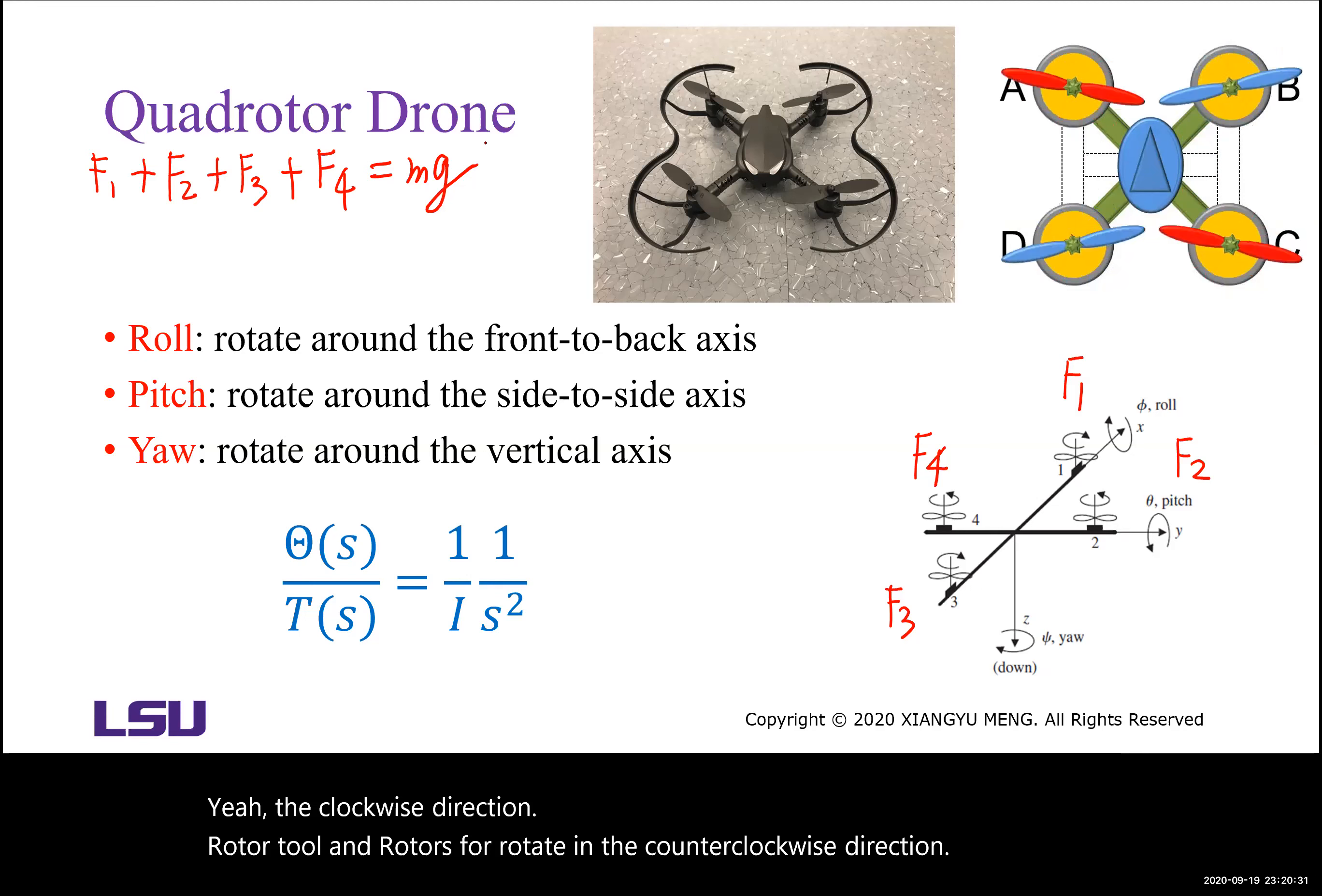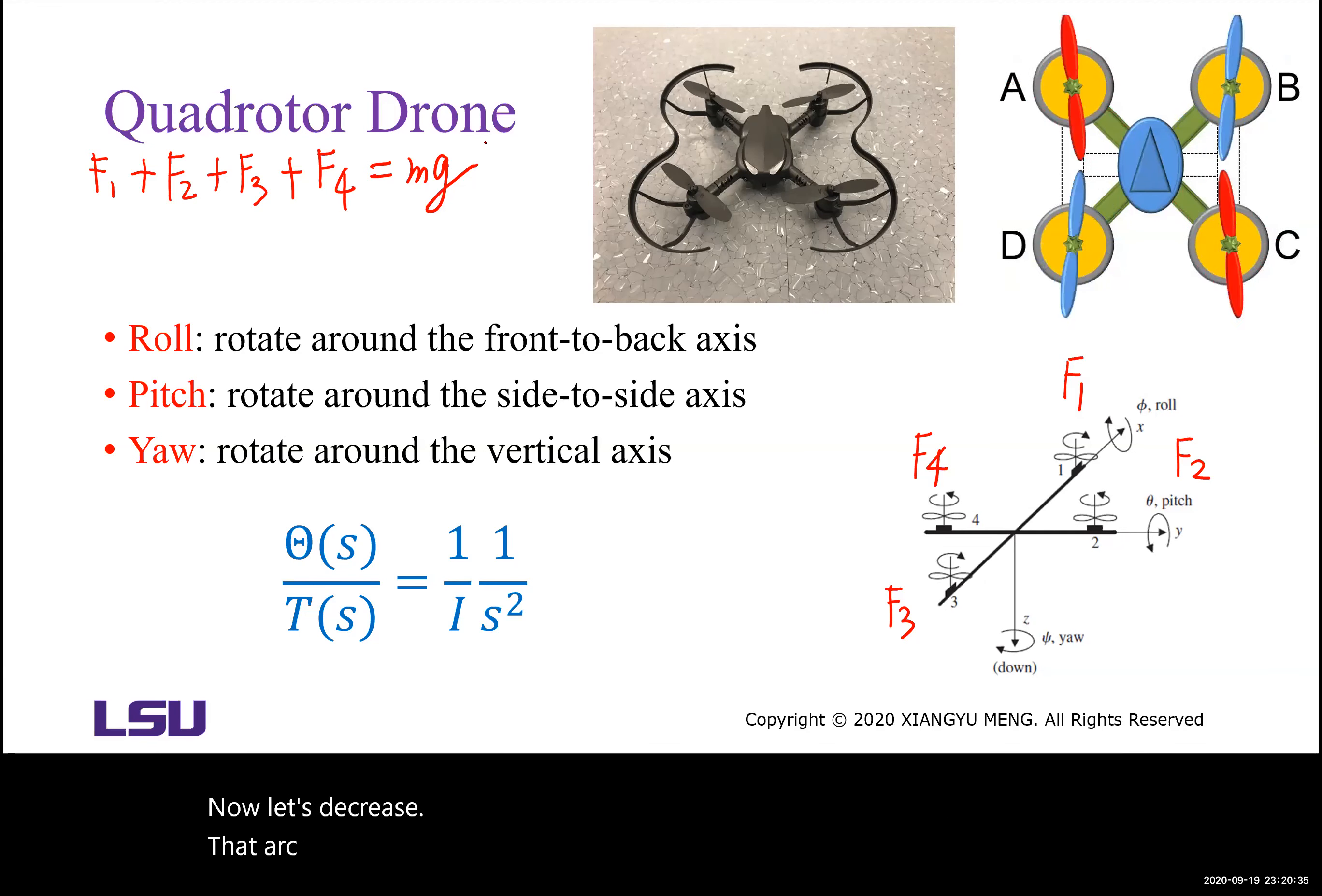Now, let's decrease the torque of Rotor 1 and Rotor 3. A decrease in the torque will be a negative disturbance. Based on Newton's law, the negative disturbance will also be applied to the motor mounted on the quadcopter frame.